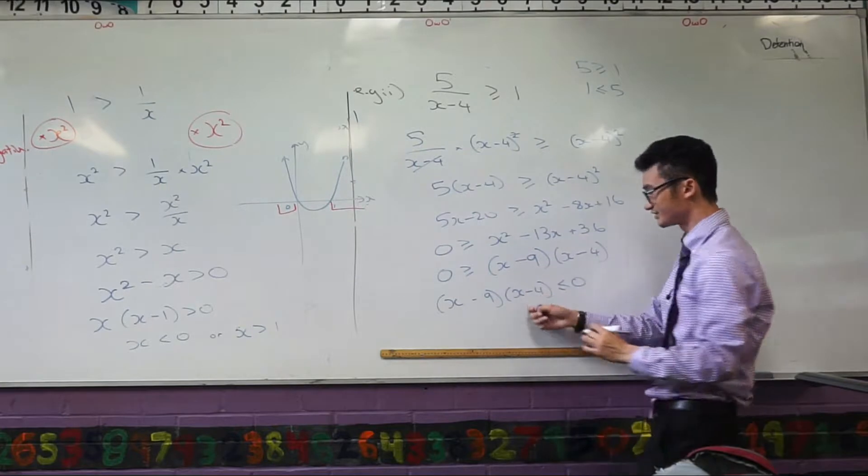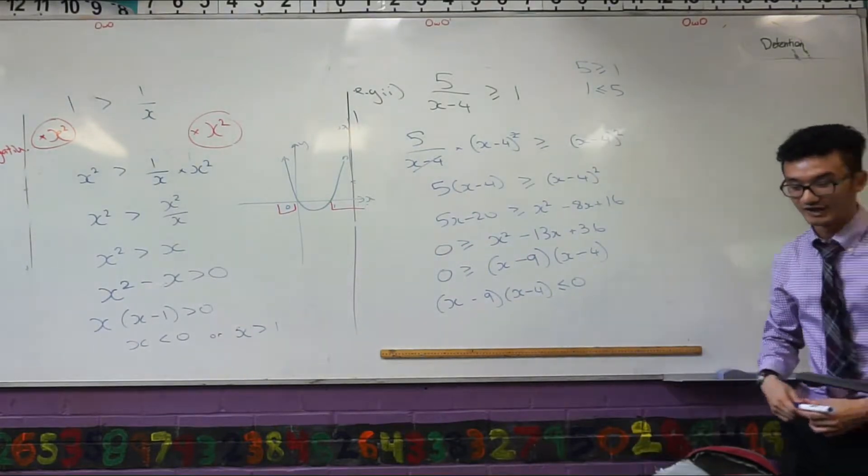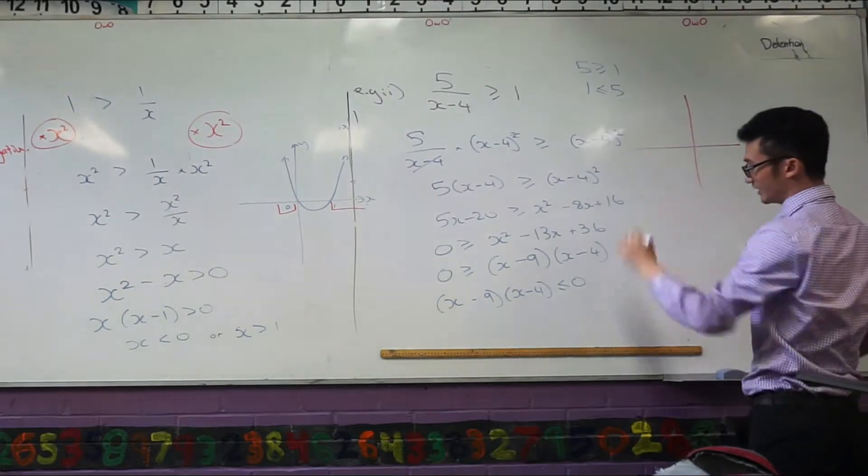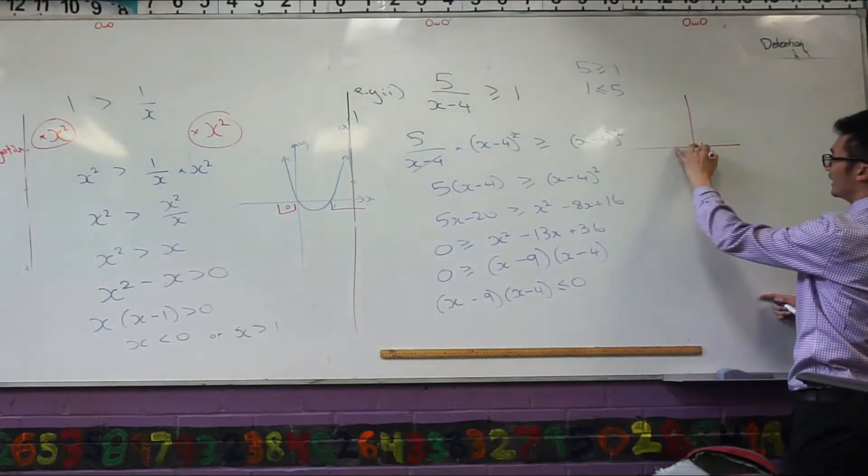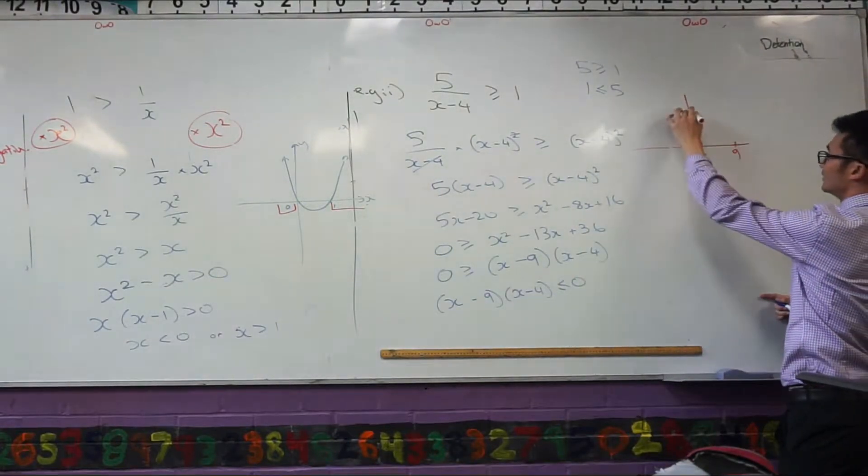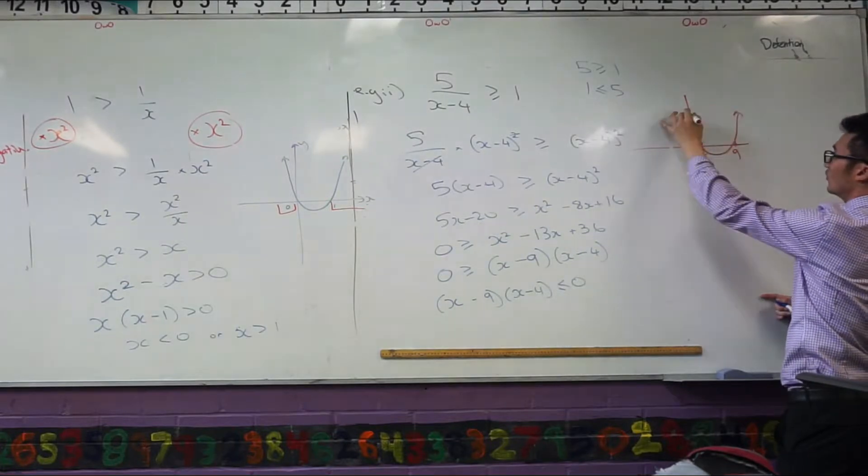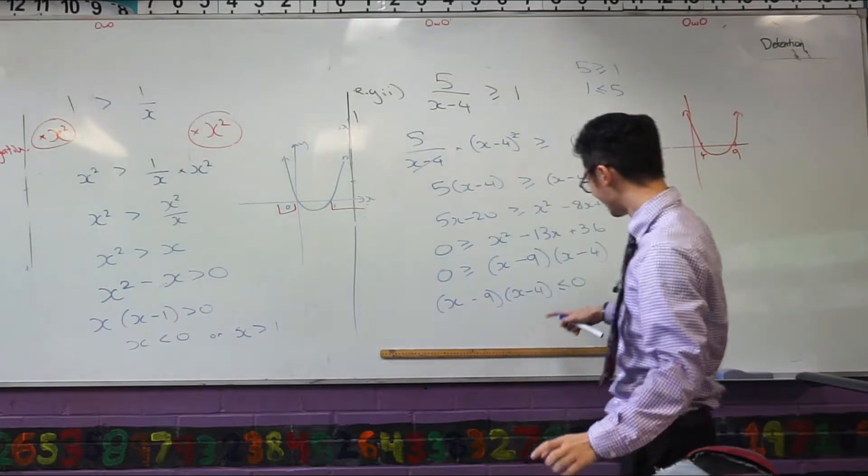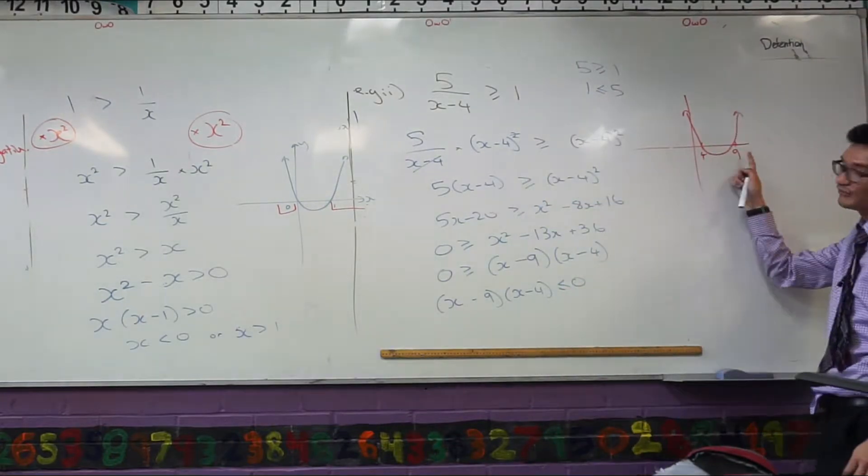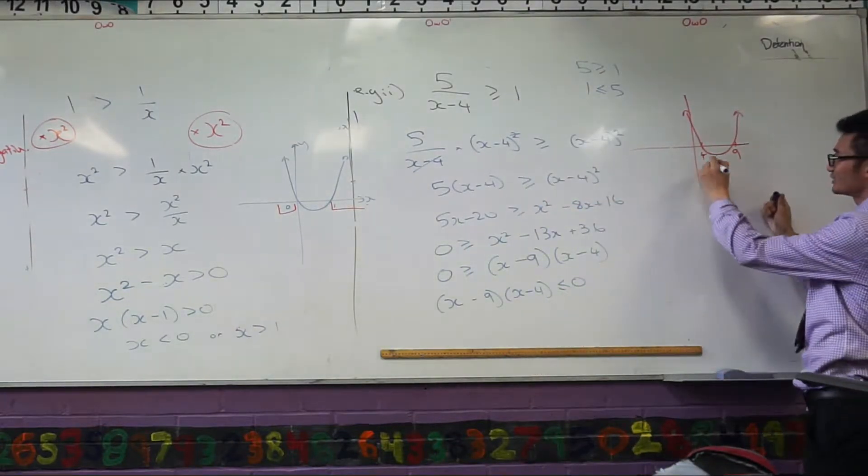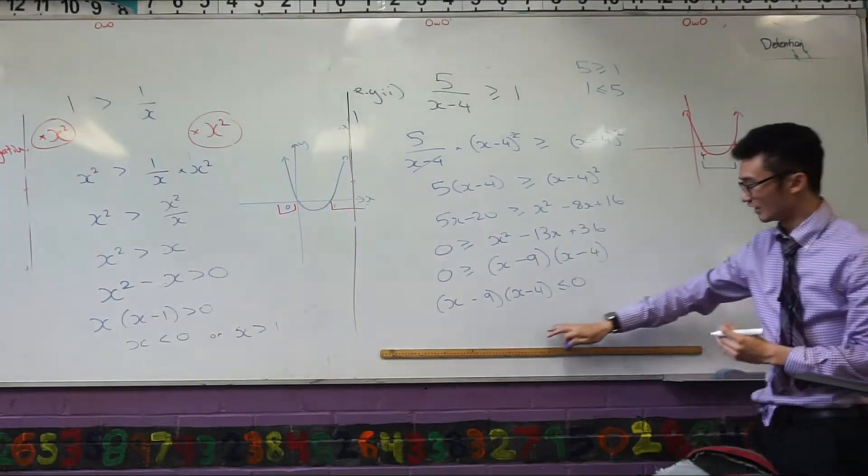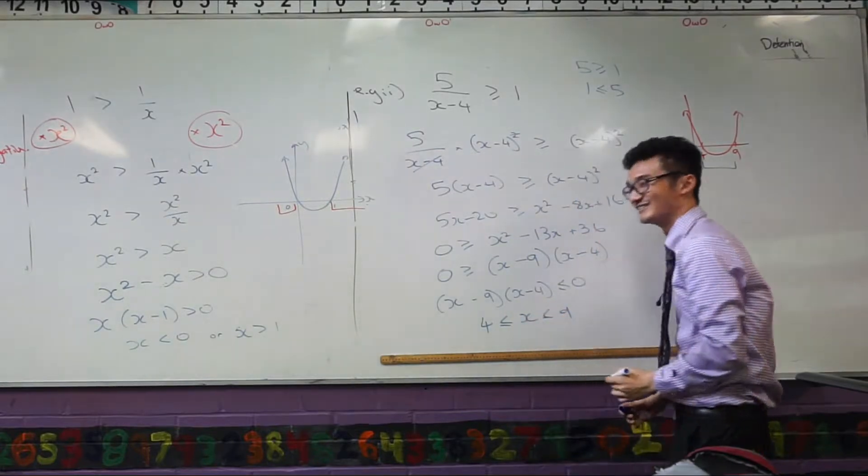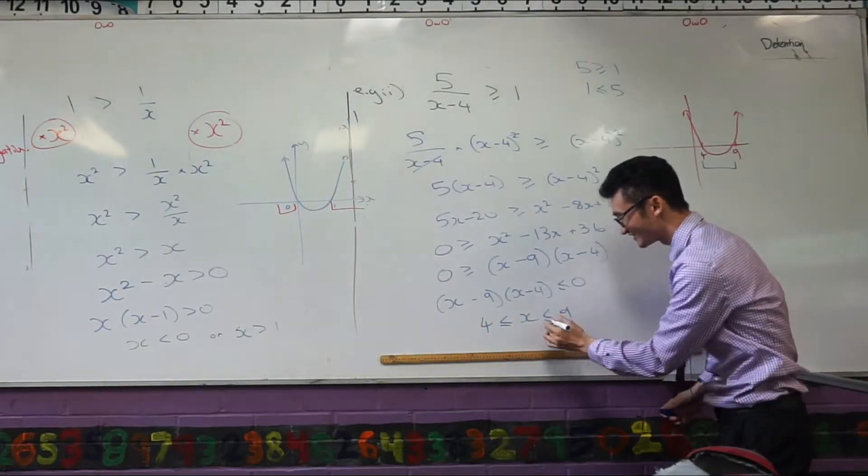So I'm looking for when this is less than or equal to 0. And I can draw that. That would look like this. So my intercepts are 4 and 9. And I'm looking for less than or equal to 0, which means it has to be below the axis. I'm looking for this section here, which I can describe like this. That's awesome.